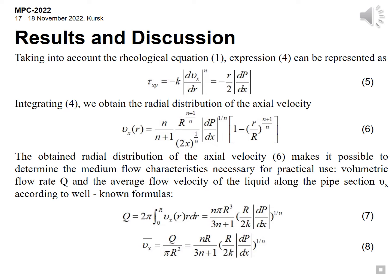The obtained radial distribution of the axial velocity makes it possible to determine the medium flow characteristics necessary for practical use, volumetric flow rate Q and the average flow velocity of the liquid along the pipe section epsilon x according to well-known formulas.